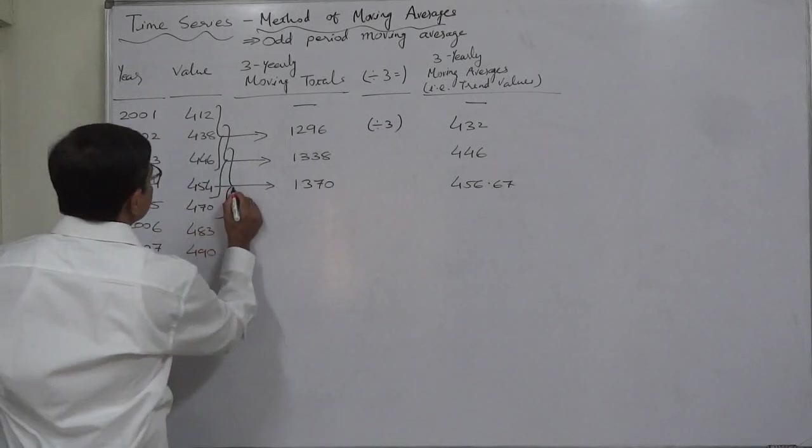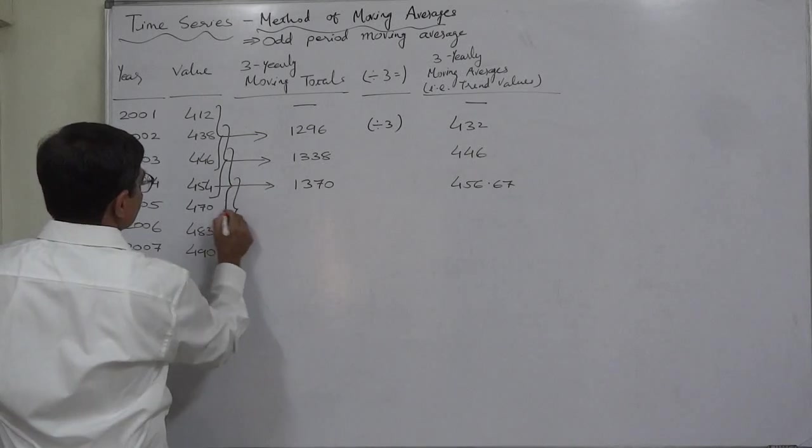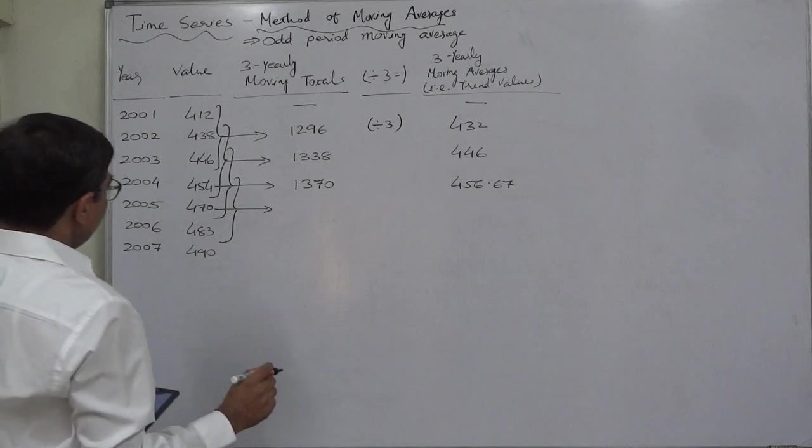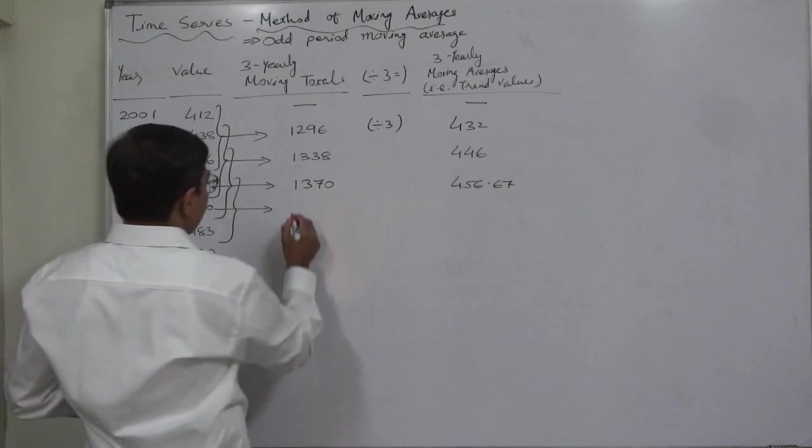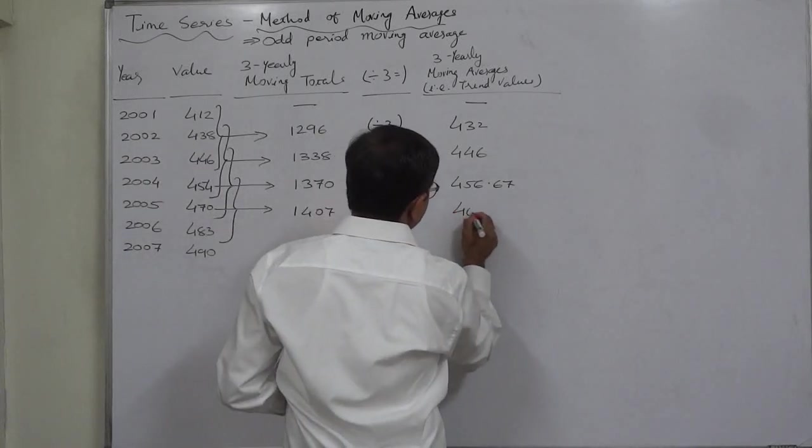Now next three will be these three. Yes, drop 446 and add 483. Total will be 1407. Divide it by three, it will be 469.